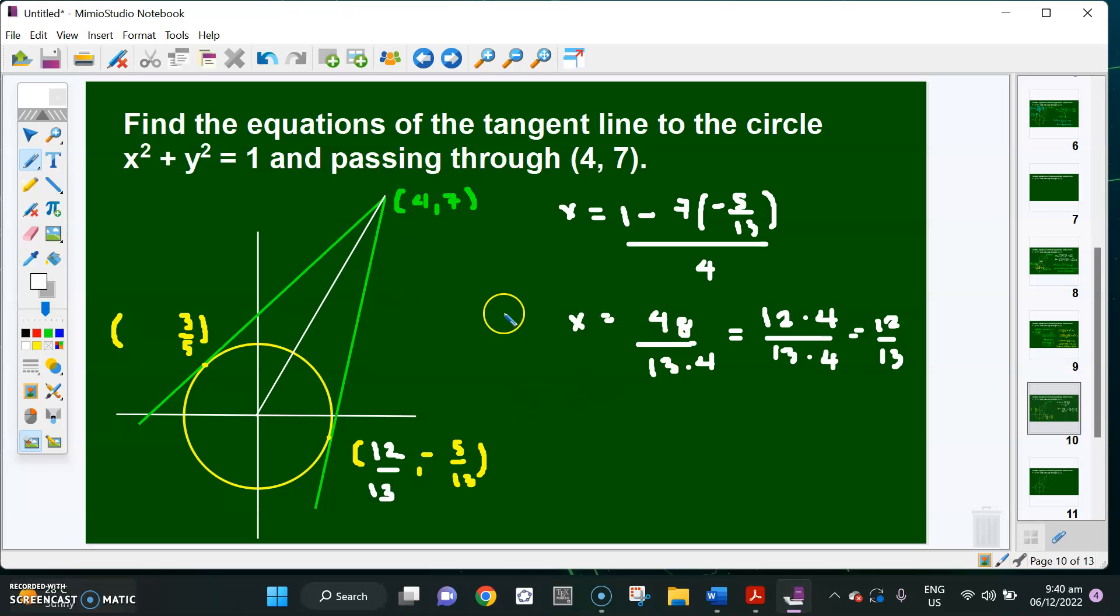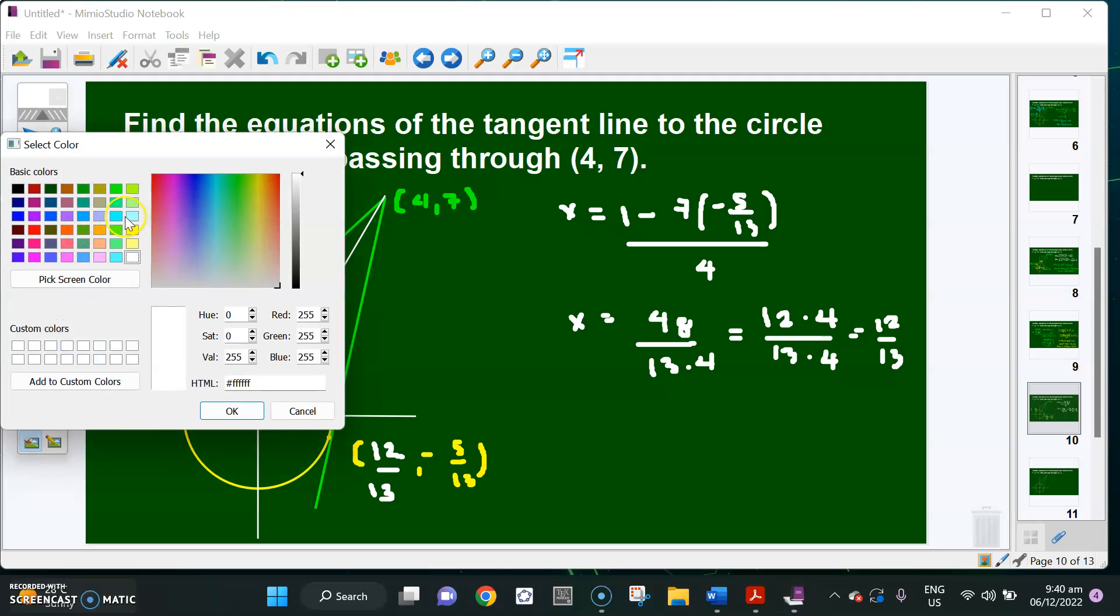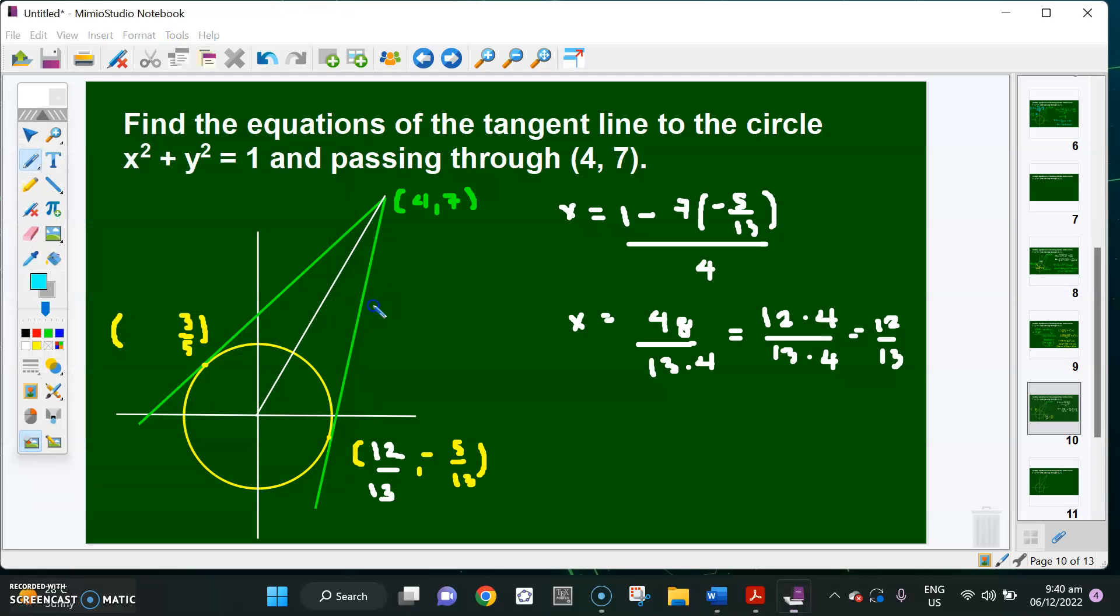I already have the abscissa. I have both points. We can simply get the equation. So the easiest way to do this is get the slope. Let's compute the slope: that is (7 minus negative 5/13) over (4 minus 12/13). This one will become (91 plus 5) over 13, which is 96 over 13. This one will become (52 minus 12), 40 over 13. Cancel the 1 over 13, so 96 over 40. And simplifying this, the slope is 12 over 5.